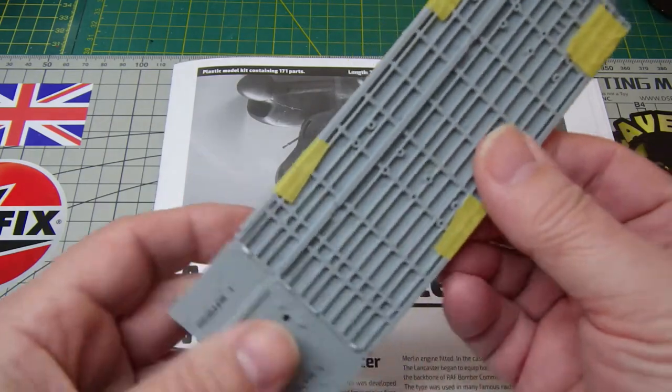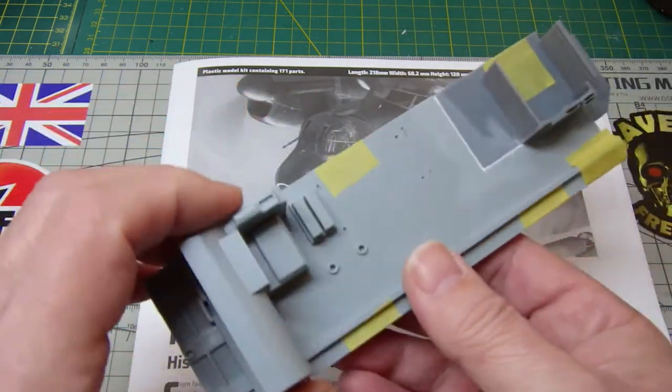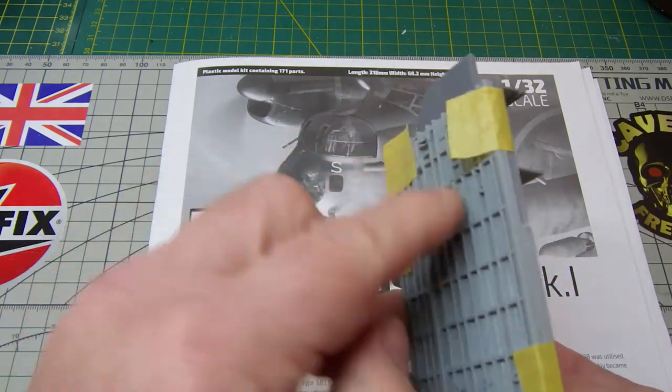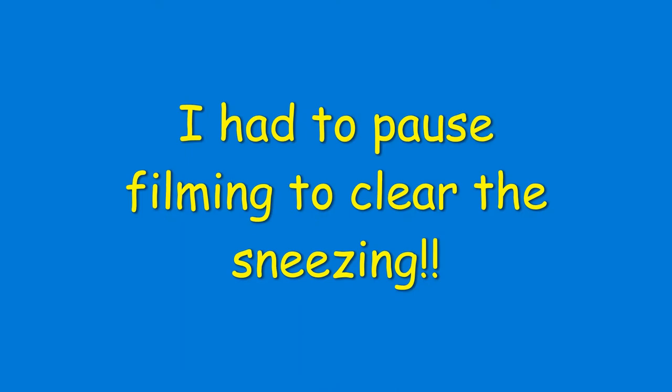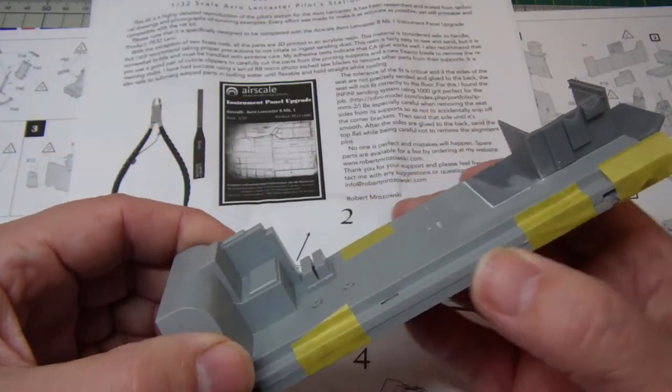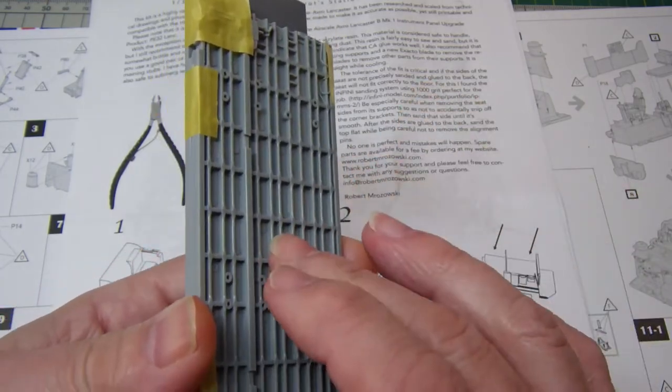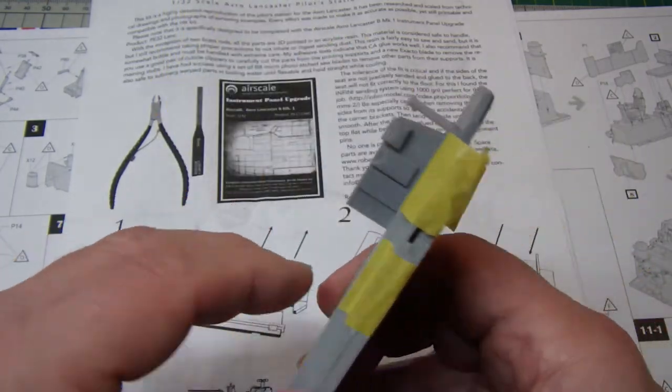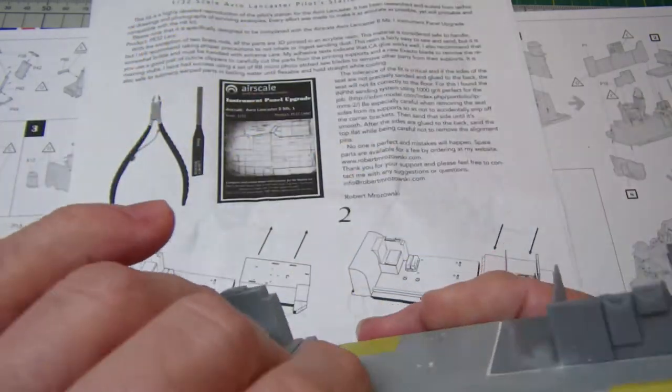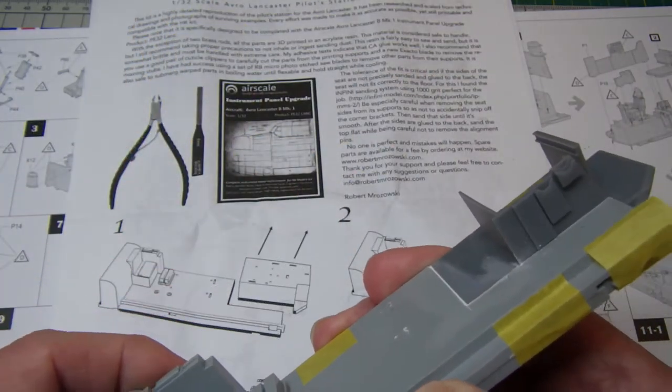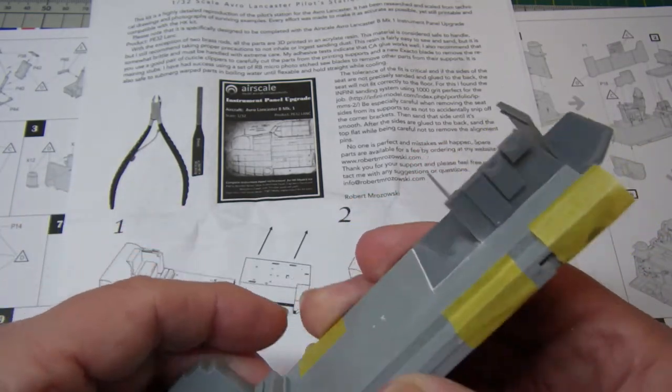Right, so the cockpit floor - going back to where we were - the cockpit floor actually sticks and glues to the roof of the bomb bay. The cockpit floor is fitted to the bomb bay roof. In this particular kit, because it's just the nose, you don't have the bombs.